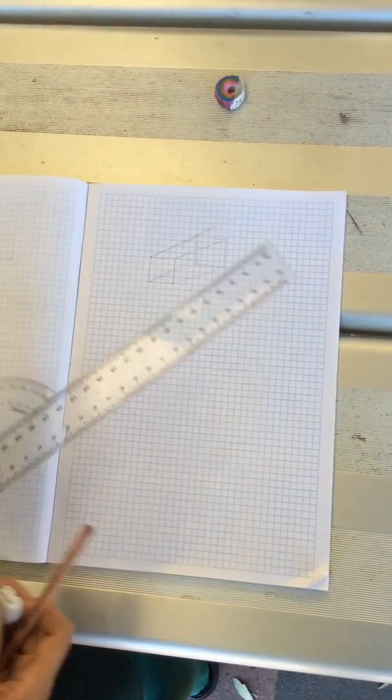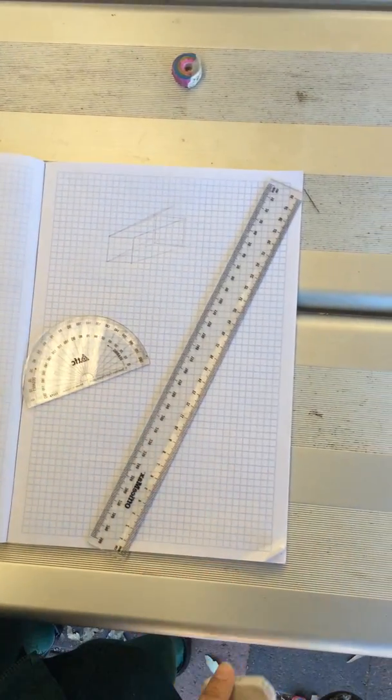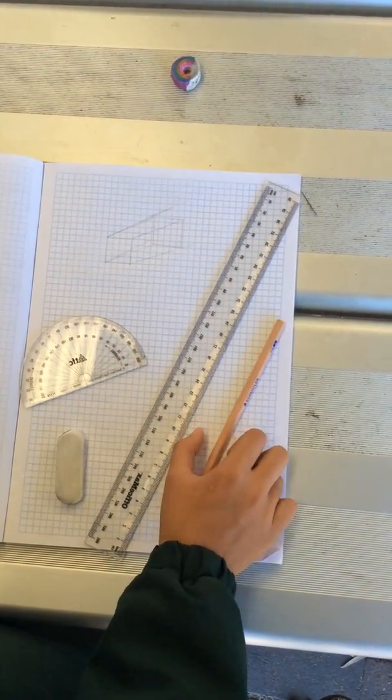First, you need a protractor, a ruler, a rubber, and a pencil.